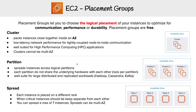Then you have spread. Spread is when each instance is placed on a different rack, and this is used when you have critical instances that should be kept separate from each other. You can spread a max of seven instances, and spreads can be multi-AZ, whereas clusters are not allowed to go multi-AZ.